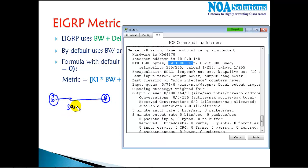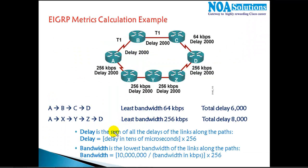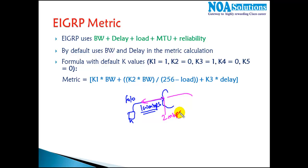The question is: when do we need to change the bandwidth? Let's say there's a serial link between two routers and the bandwidth provided by the service provider is 512 kbps. The default bandwidth on the serial interface is 1544 kbps, but what the service provider gives you controls actual throughput — similar to an ISP giving you a 2 Mbps plan despite a 100 Mbps port speed.